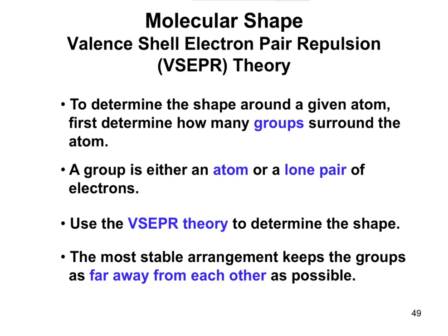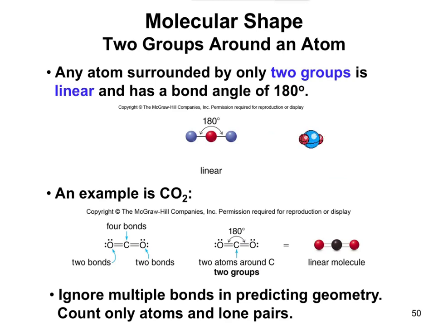We're going to go through examples on the next few slides to talk about the shapes that can be formed around particular atoms. This is the linear example I was just describing, an atom surrounded by two groups.